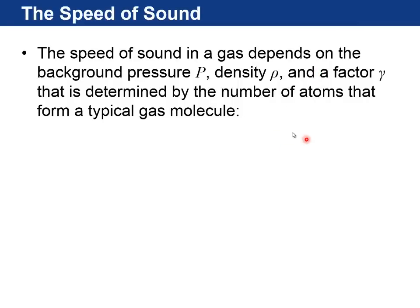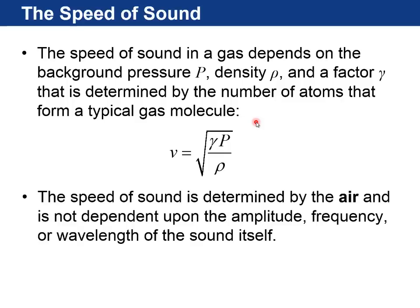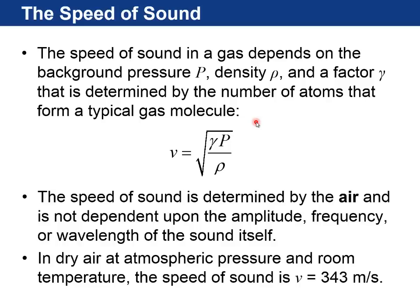The speed of sound in a gas depends on the background pressure, that ambient pressure P, the density of the air and a gamma factor that depends on the number of atoms that form a typical gas molecule. So the basic idea of this equation is that the speed of sound is determined by the air itself, the properties of the air and it does not depend on the properties of the sound such as amplitude, frequency, or wavelength. And if you solve this out in dry air at atmospheric pressure and room temperature, the speed of sound is 343 meters per second.